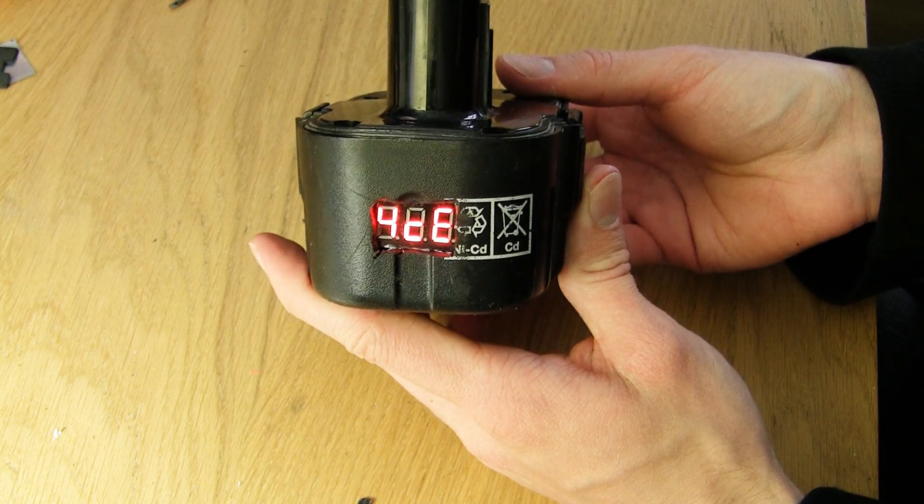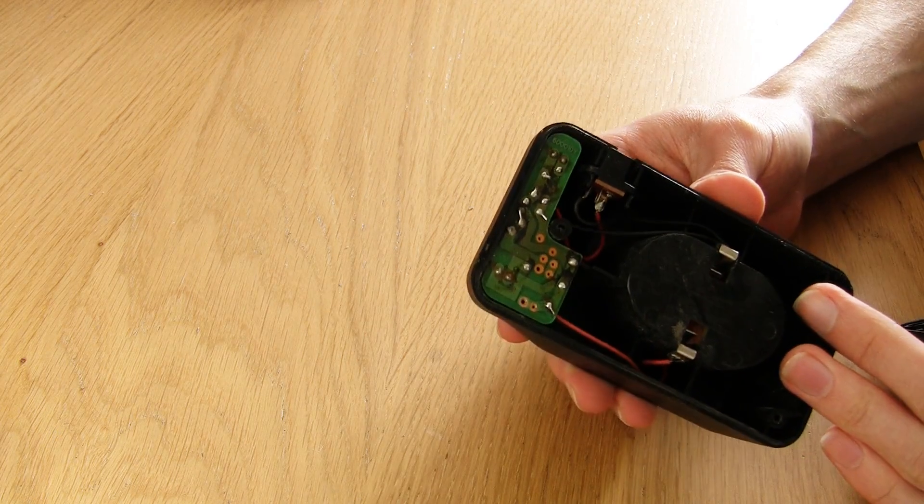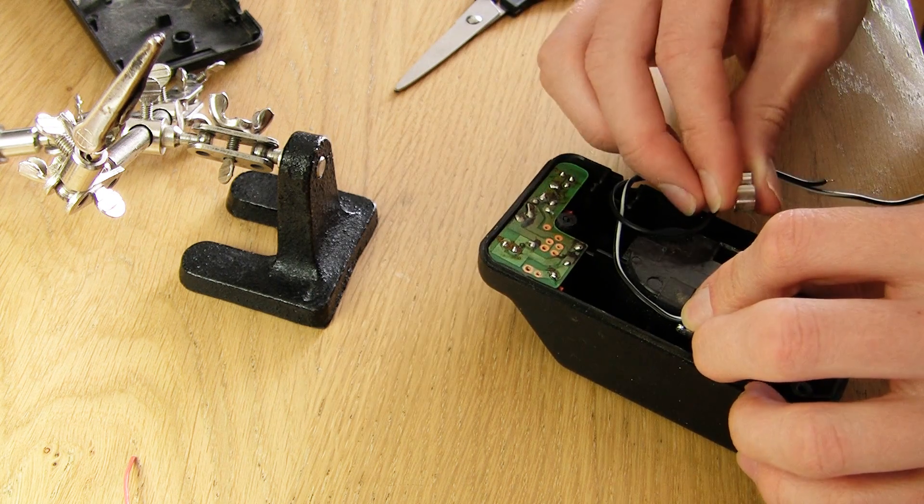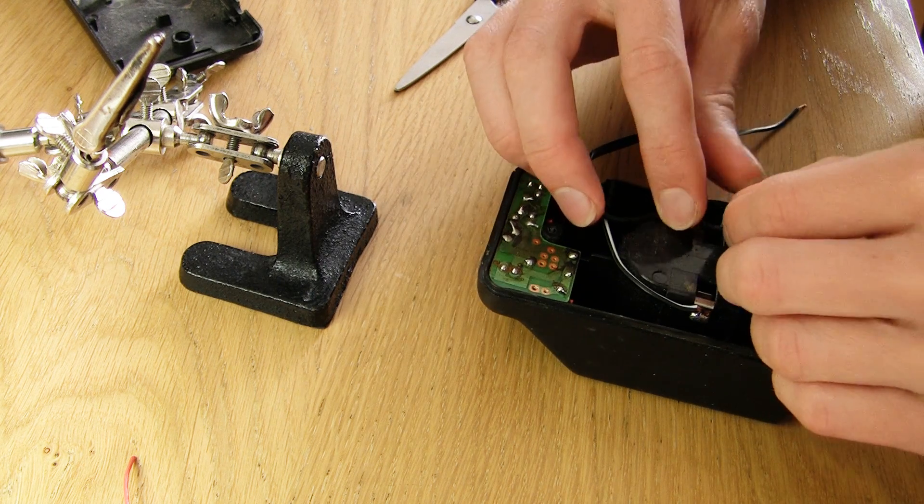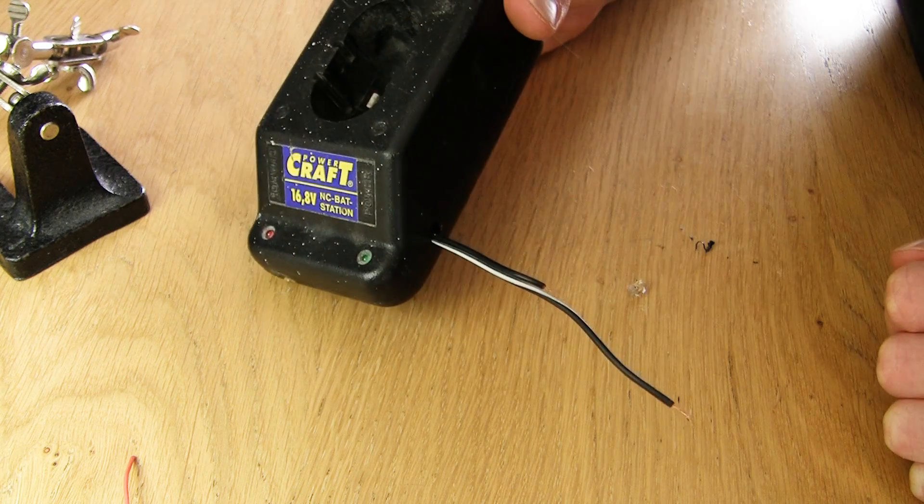The final thing to do is to bypass the electronics in the original charger so that the new lithium-ion cells can be charged with a suitable charger. All you have to do is solder some external wire to the original charger's contacts, making sure that you have some kind of indicator of the polarity.